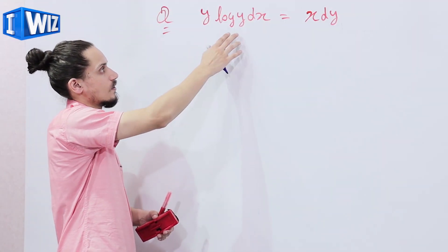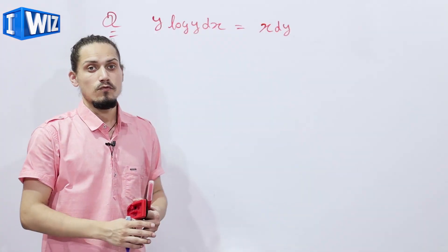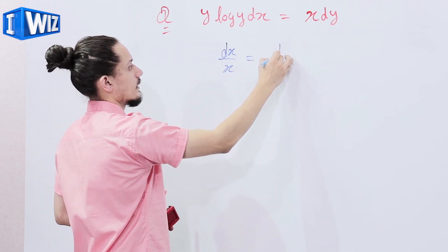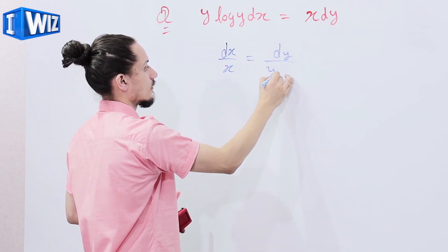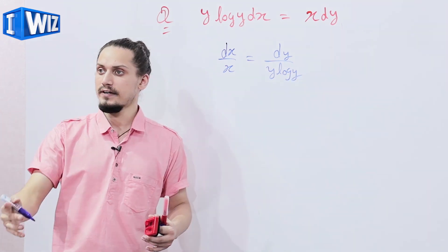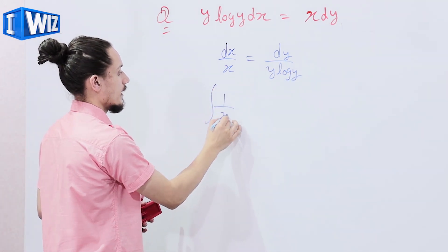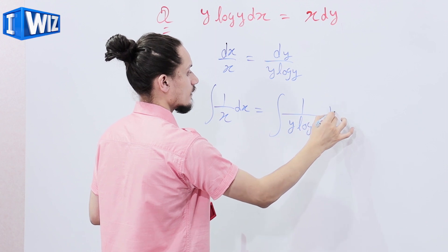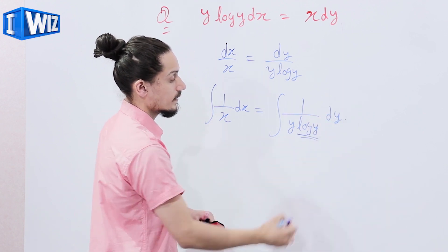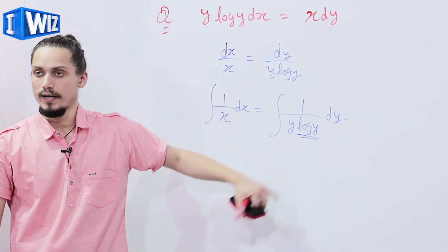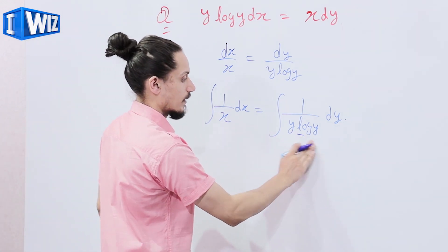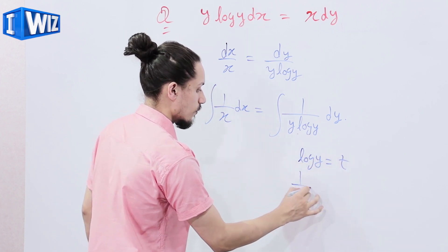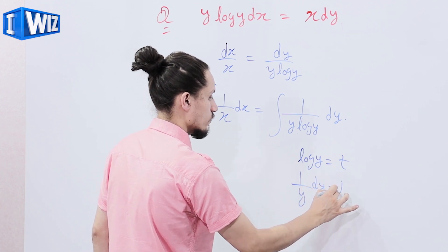The next example is y·log(y)dx = x·dy. First step is separating the variables, so we get dx/x = dy/(y·log(y)). Second step, taking integrals on both sides: integral of 1/x dx = integral of 1/(y·log(y)) dy. We don't know the direct integral of the reciprocal of log y, so we'll use the method of substitution. Taking log(y) = t, we get (1/y)dy = dt.